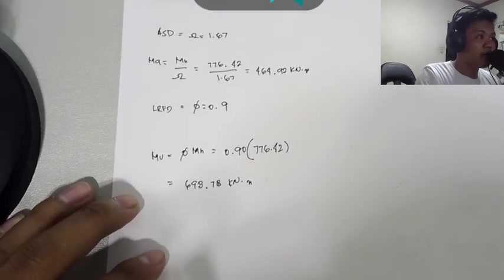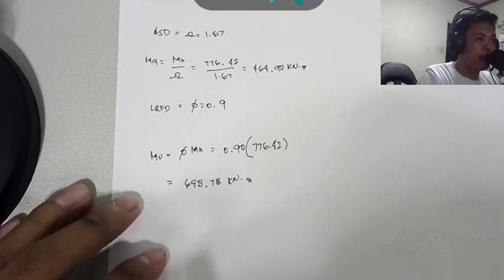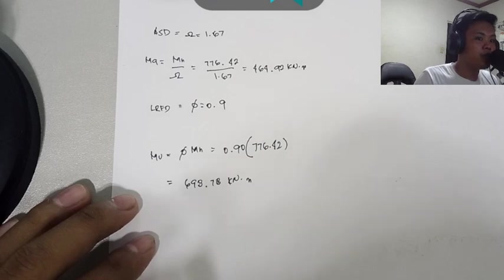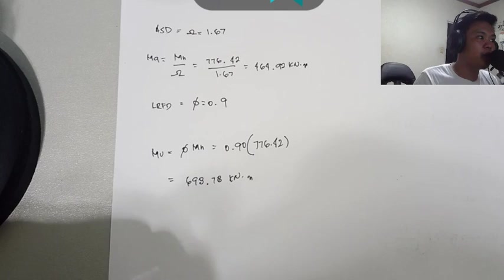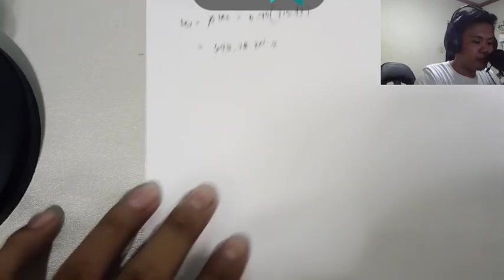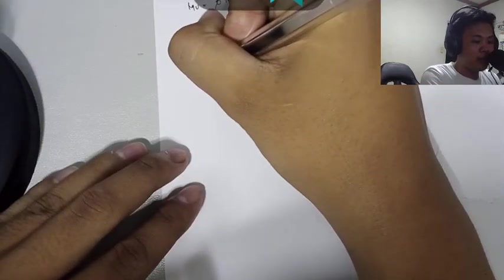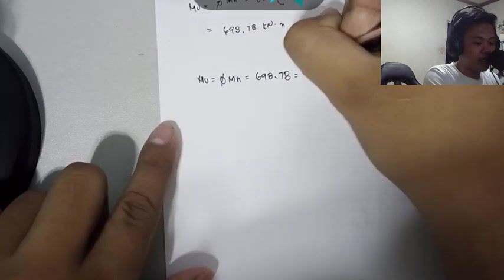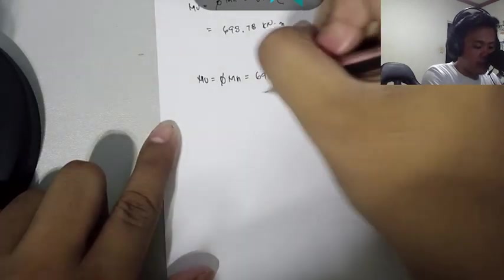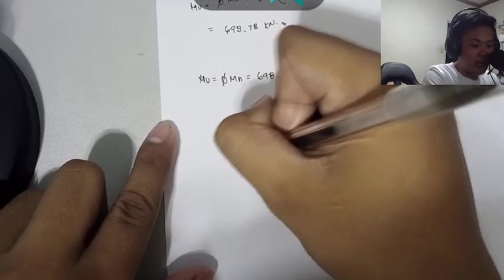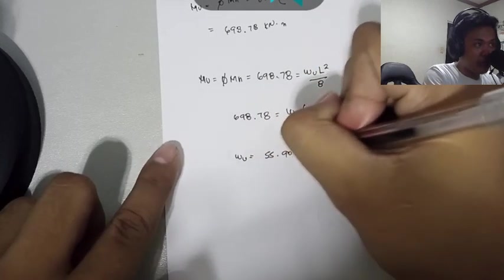If you notice, we got two ultimate capacities. Which one will we use to identify the live load? We'll use the largest one. Why the largest? Because if you think about it, if we use the smallest and since there's a minimum capacity of 698, if you use the smaller one, it's more likely it can fail. Now we have the formula: MU equals factor of safety times MN equals 698.78 equals WU L² over 8. Our span is 10, so 10² over 8. We get a value of WU of 55.90 kilonewton per meter.